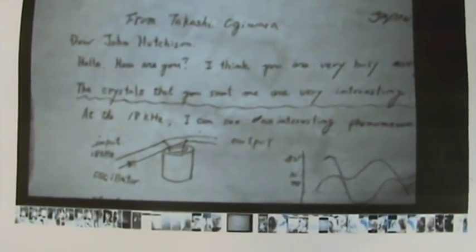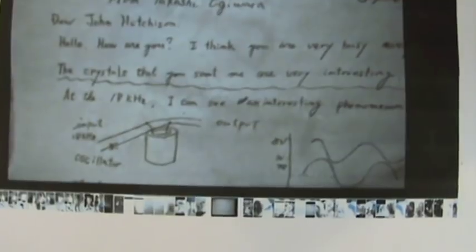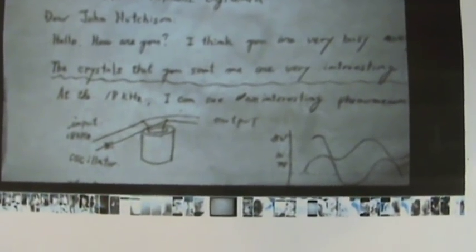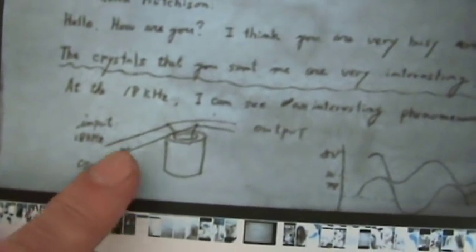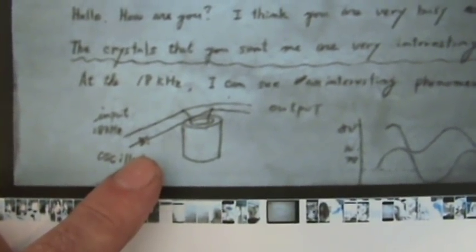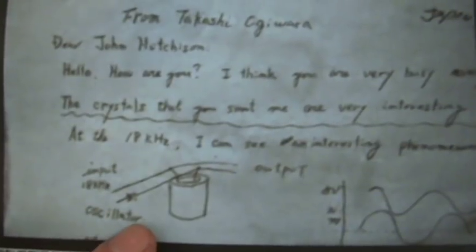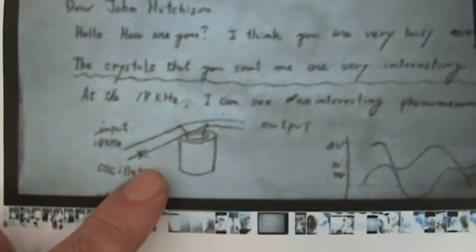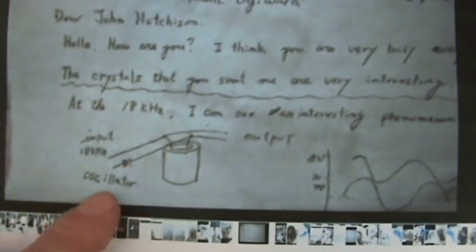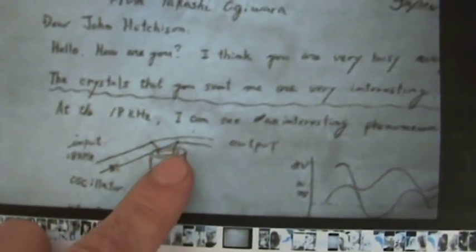But here's from Tokyo Institute of Technology. This is where John Hutchison had the cylinder examined. It says, 'Dear John, hello. How are you? You are very busy. The crystals that you sent me are very interesting. At the 18 kilohertz, I can see an interesting phenomenon.' I've got to try this too. I need a new frequency generator and I'm working on repairing one of my old vintage ones. So I see she has a diode on one side too. Oscillator. Two wires going across it then. She's showing a waveform.